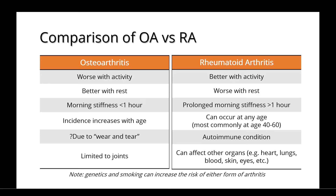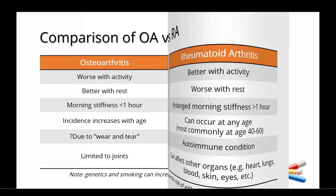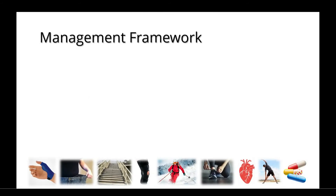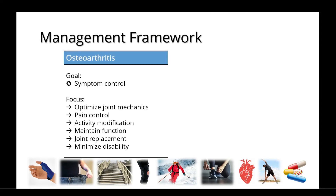Genetics and smoking can increase the risk of either form of arthritis. The management framework for these conditions also varies. With osteoarthritis, the goal is symptom control. This can be accomplished with optimizing joint mechanics, pain control, modifying activities to maintain function, joint replacement if necessary, and minimizing disability as much as possible.